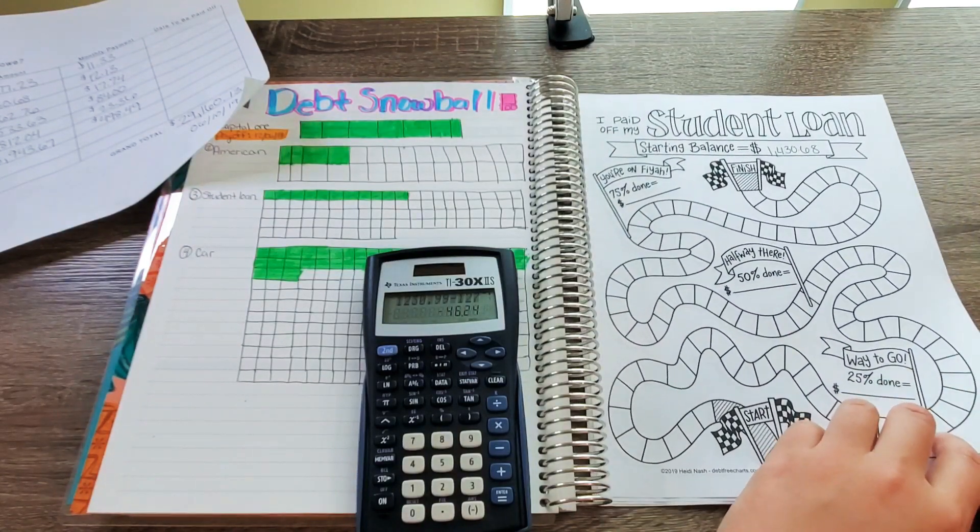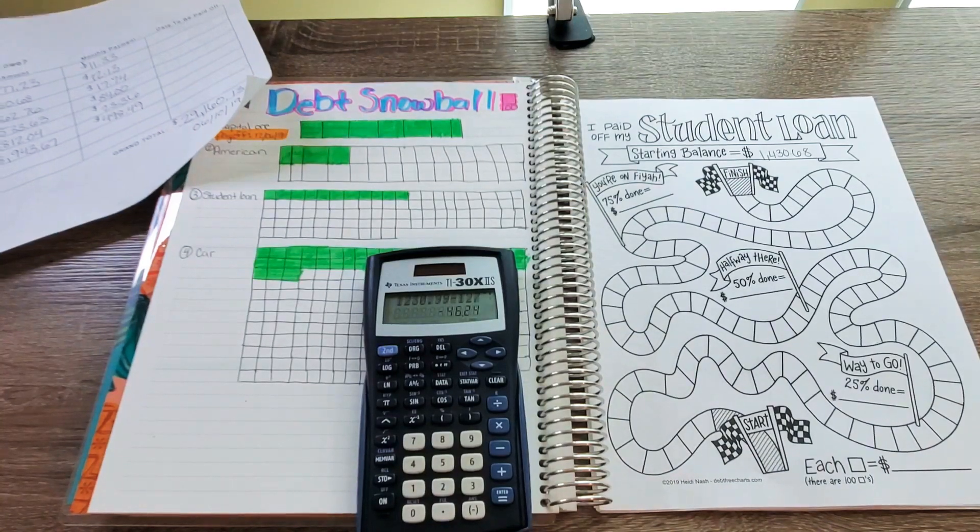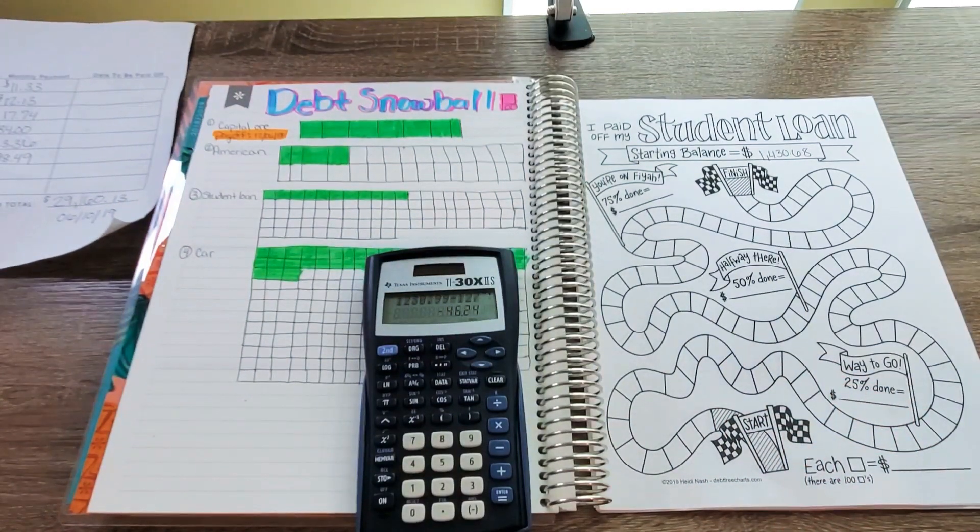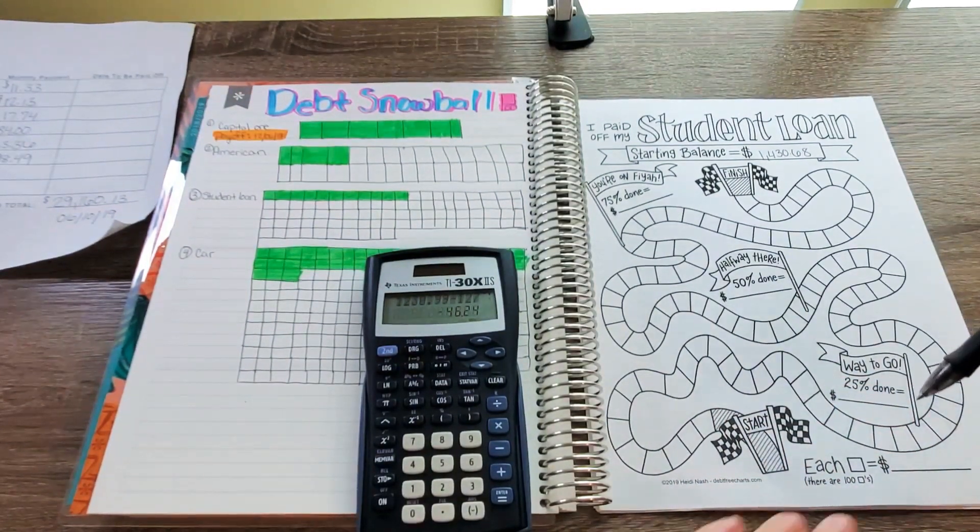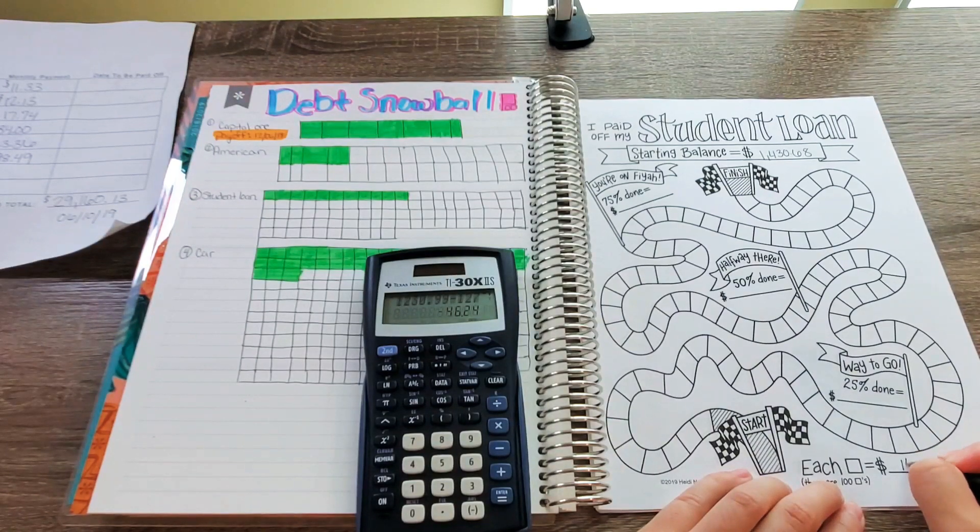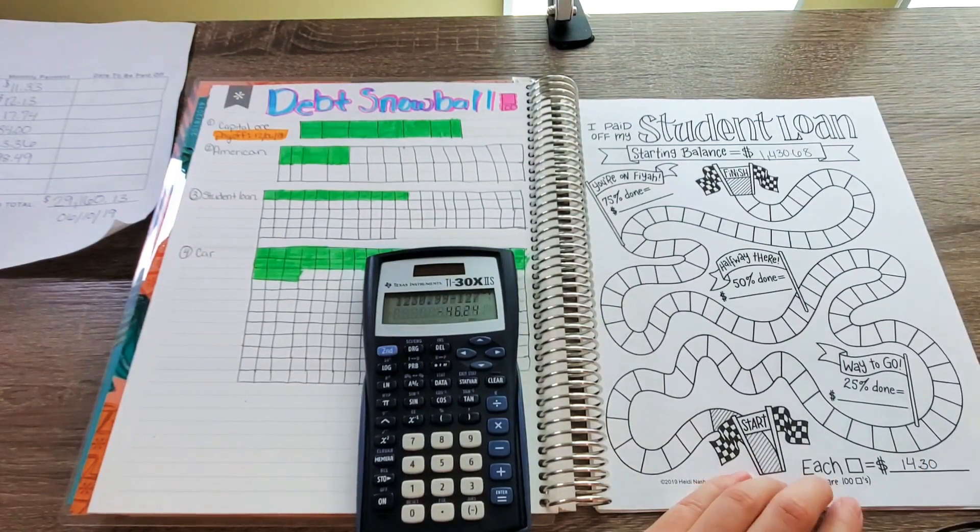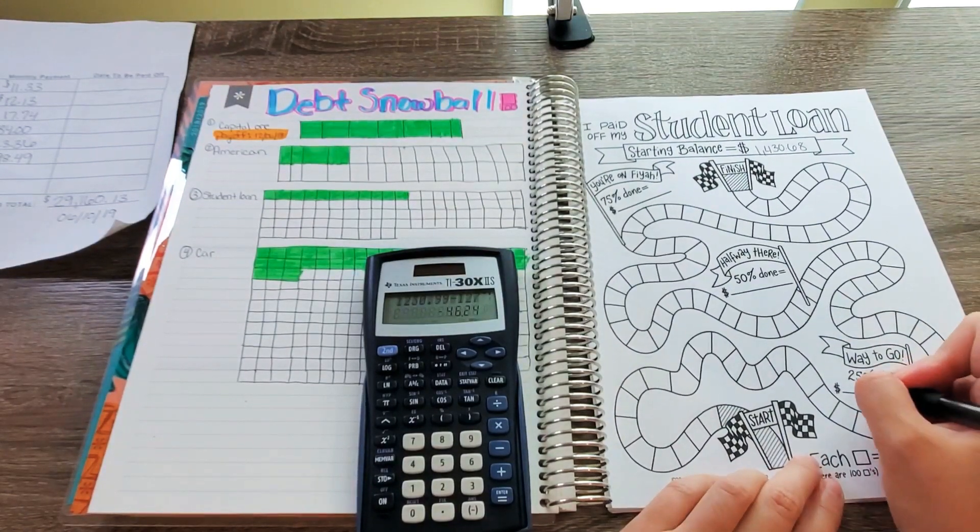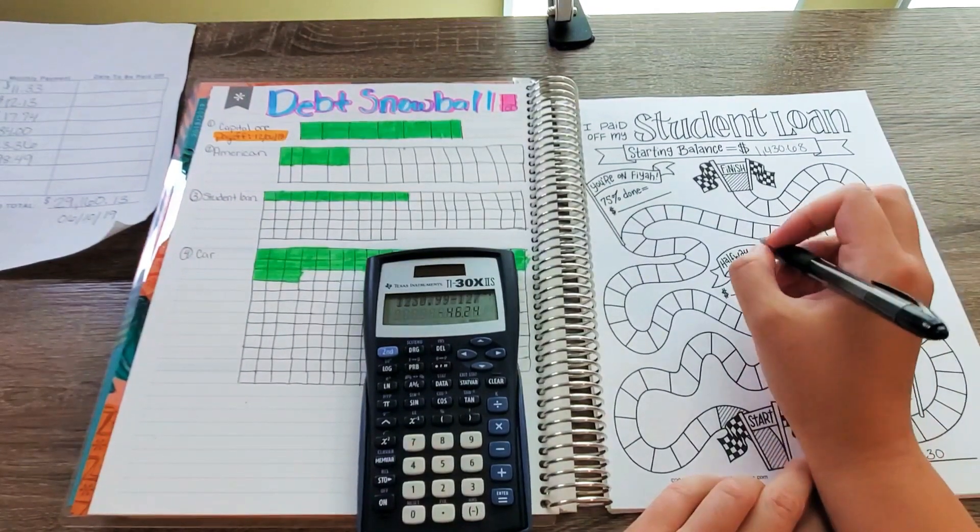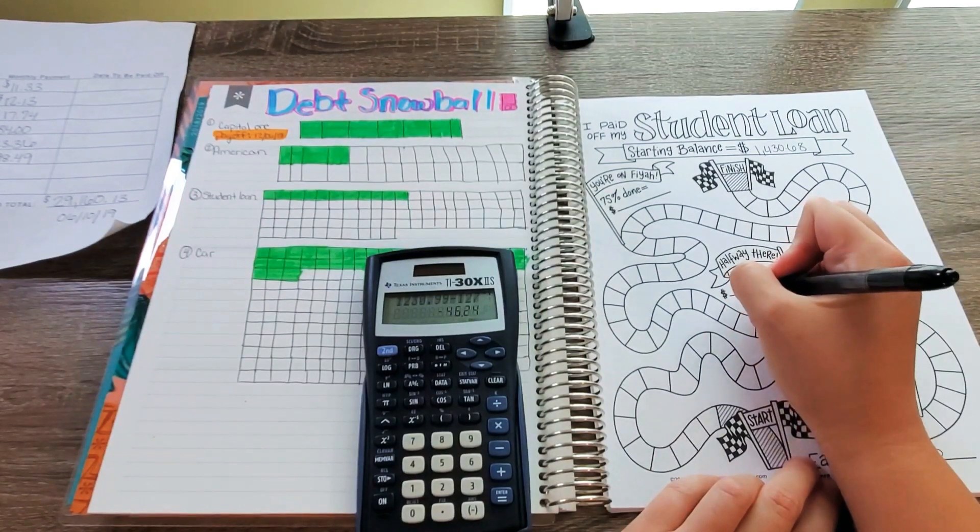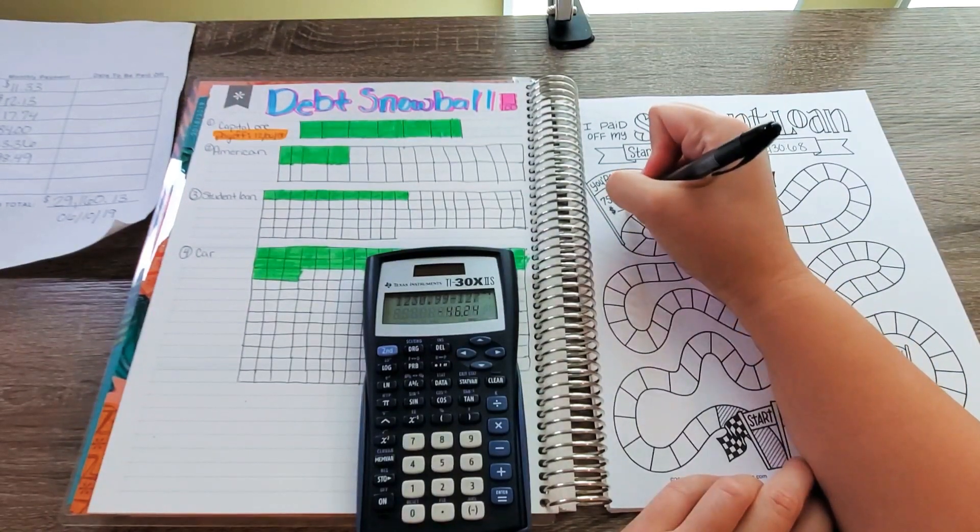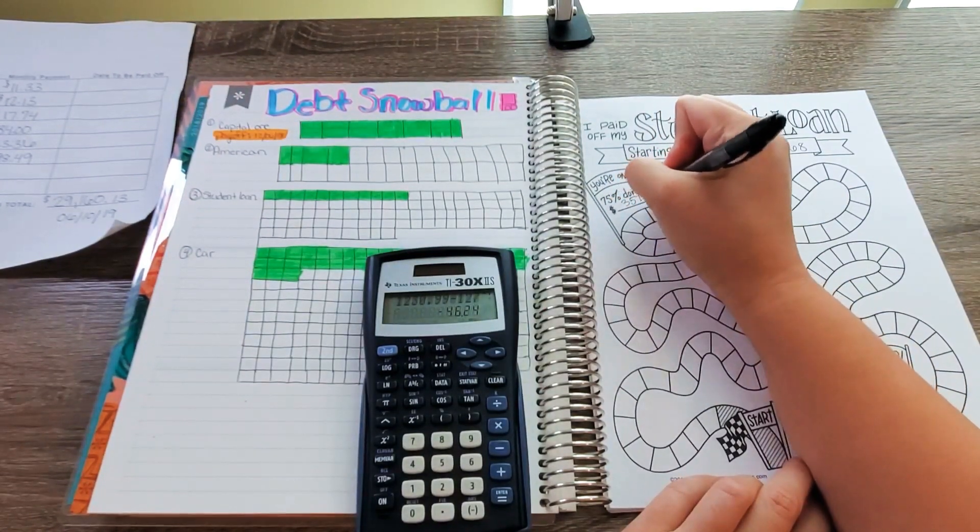Alright, so my balance for student number D is $1,230.99. Moving right along for student loan number B, that was at $1,430.68. Alright, same thing, we are going to be doing the halfway marks for this, each box is going to be $14.30. 25% of the way is $1,073.01, 50% off is $715.34, and then 75% done will be $357.67.